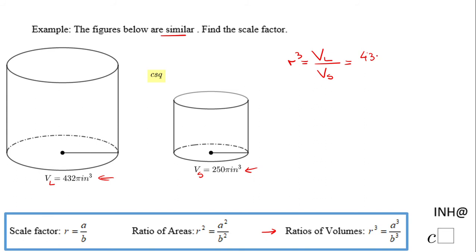432π as the volume of the larger figure over 250π. So here the first thing you want to do is simplify the π. The ratio becomes 432 over 250. And now here you want to look